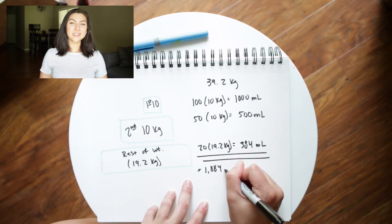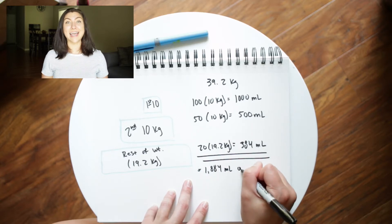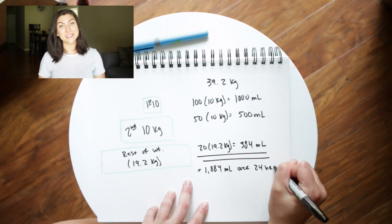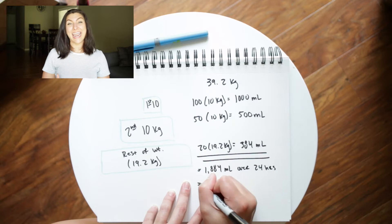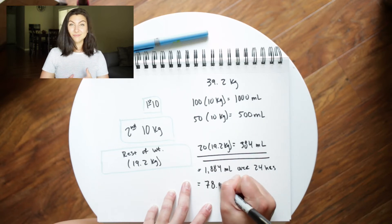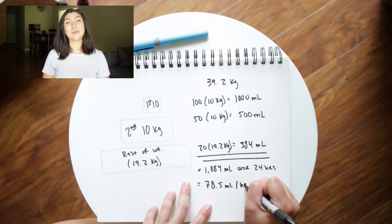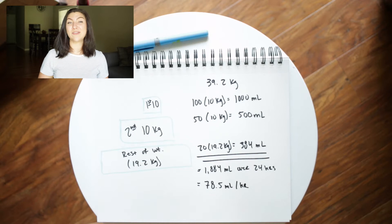We subtract that and then multiply that number by 20 to get the rest. Just like the formula says, we then add up all three of those numbers to get our 24-hour total volume, and then divide by 24 to get the hourly rate.